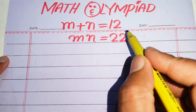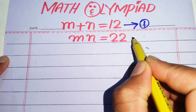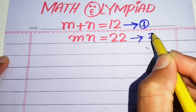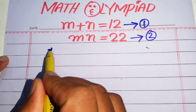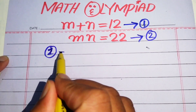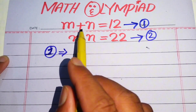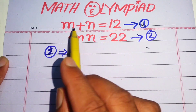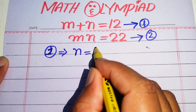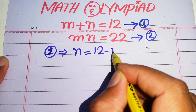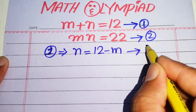The very first step: we label m plus n equals 12 as equation number 1, and m times n equals 22 as equation number 2. We focus on equation number 1 and move m to the right-hand side, so we get n equals 12 minus m — we call this equation number 3.